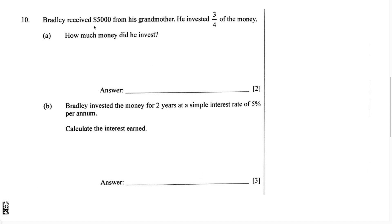This question says Bradley received $5,000 from his grandmother. He invested three-fourths of the money. Part A: how much did he invest? He invested three-fourths of the $5,000. In order to find out how much money he invested, we're going to have to multiply the total amount of money Bradley received, which was $5,000, by the fraction three-fourths.